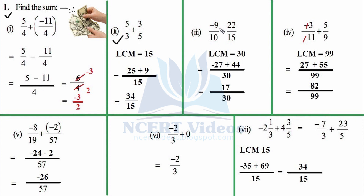Third part: −9/10 + 22/15. We have to take the LCM because the denominators are not the same. Take the bigger number (15) and multiply by its factors. 15 × 2 = 30; does 10 divide 30? Yes, 10 × 3 = 30. So LCM = 30. Now: (30/10) × (−9) = −27, and (30/15) × 22 = 44. So (−27 + 44)/30 = 17/30. That is your required answer.